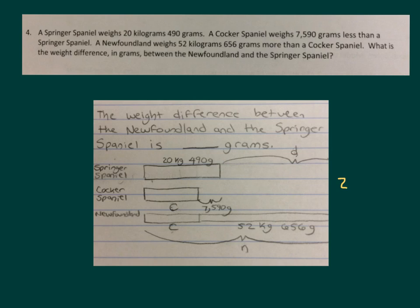Remember, if we rename it, that would be 20,490 grams minus the 7,590 grams to get the weight of the Cocker Spaniel in grams. Once we get that, we will add it to the 52 kilograms, 656 grams, to get the weight of the Newfoundland. And then finally, after we do that, we can compare the weight difference in grams of the Newfoundland and the Springer Spaniel. So you will be subtracting, you'll subtract the value that you have for the Newfoundland minus the weight of the Springer Spaniel, the 20 kilograms, 490 grams, to get that weight difference.